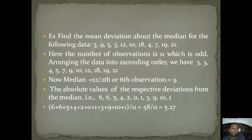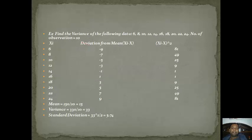After subtracting, we get deviations 6, 6, 5, 4, 2, 0 and so on. We eliminate all signs, taking absolute values, then add them all. The sum comes to 58. Since there are 11 observations, mean deviation about the median = 58/11 = 5.27.